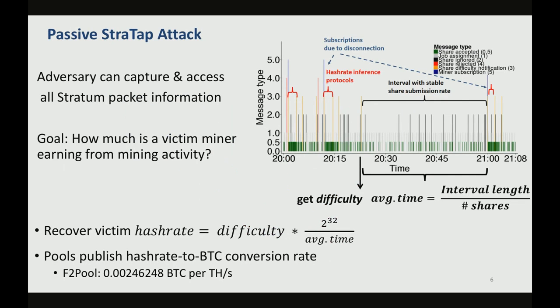Let's take a look at the first attack. This is a passive attack, and we call it the Stratum attack. This is where the attacker is able to observe all the communication of the Stratum exchange. The goal of this attack is to figure out how much the victim miner is earning from the mining activity.